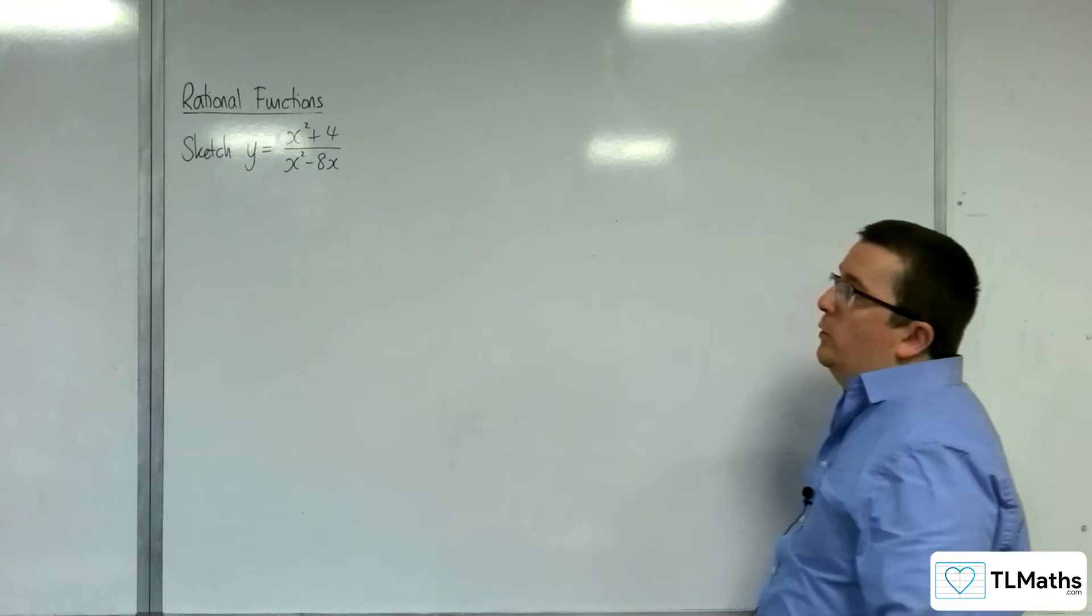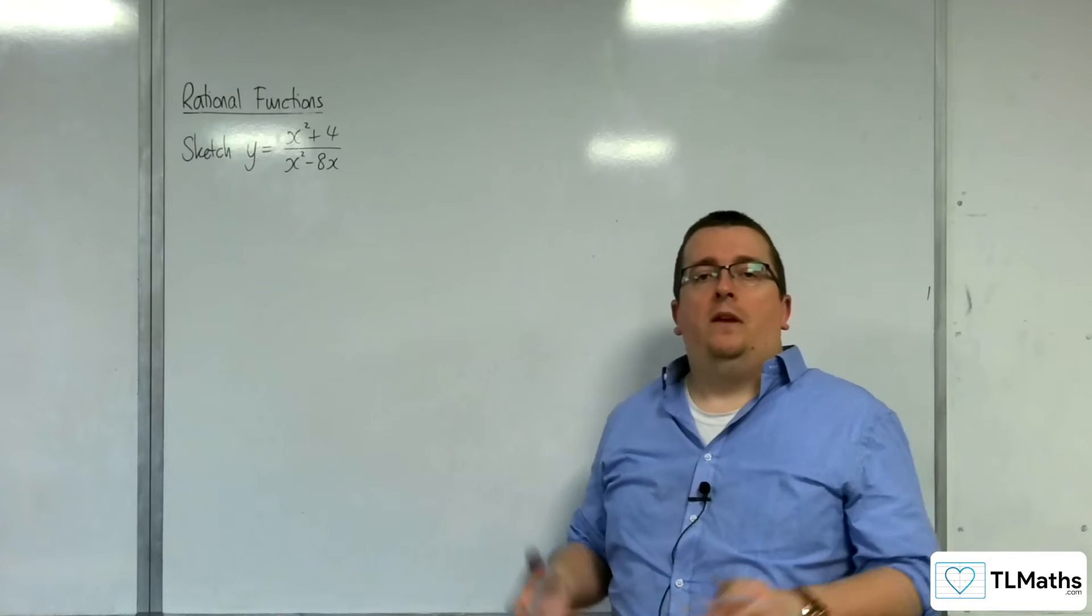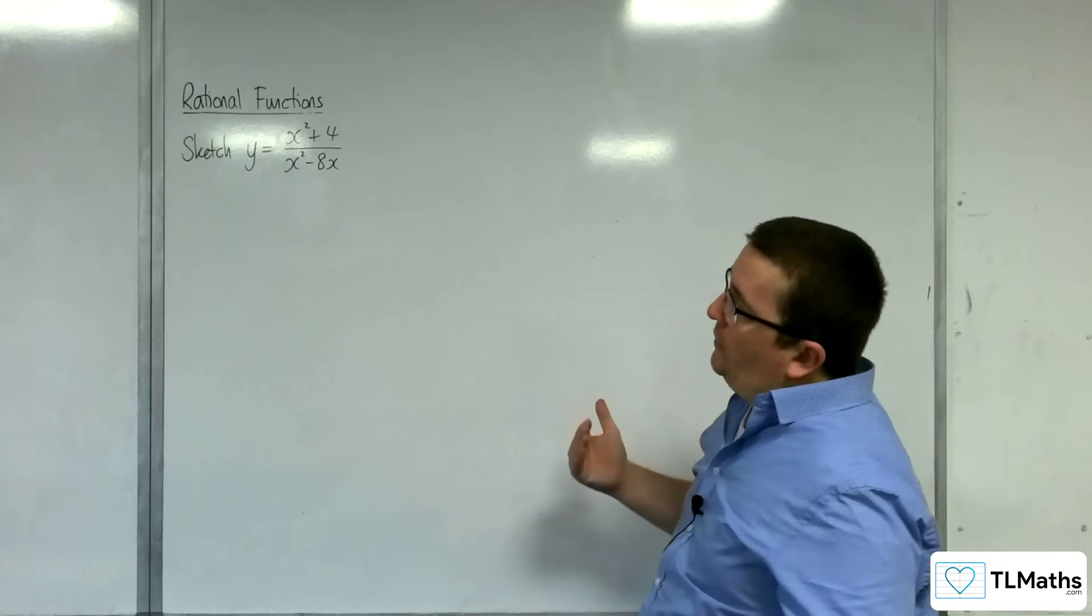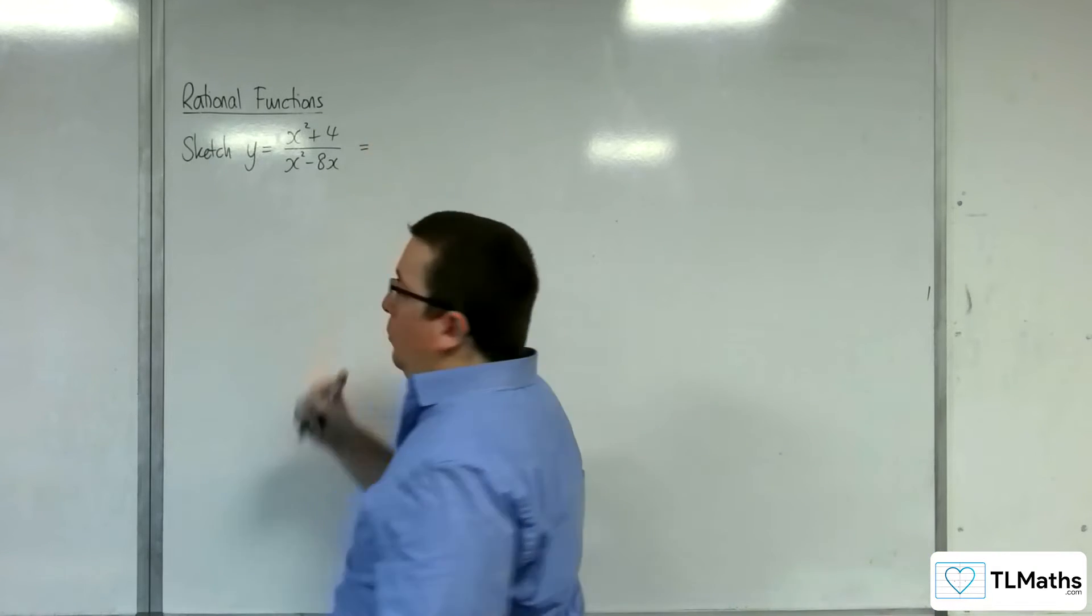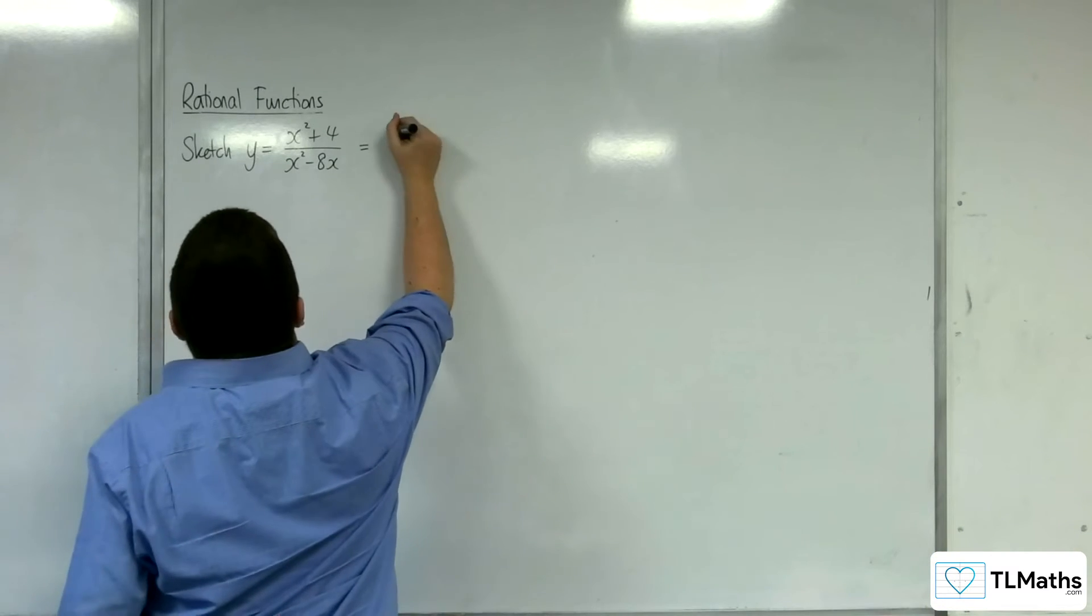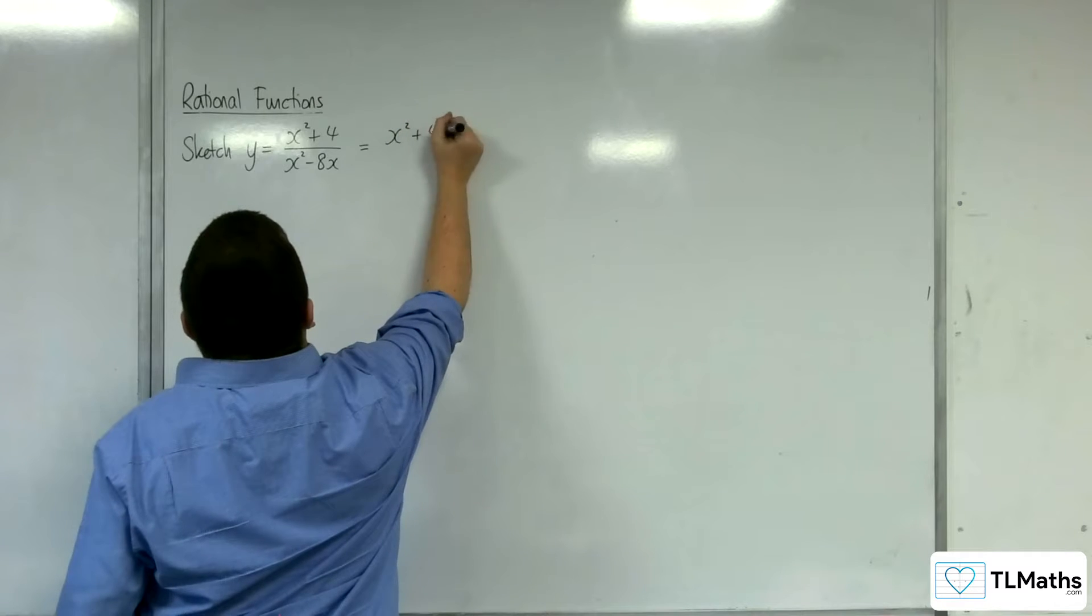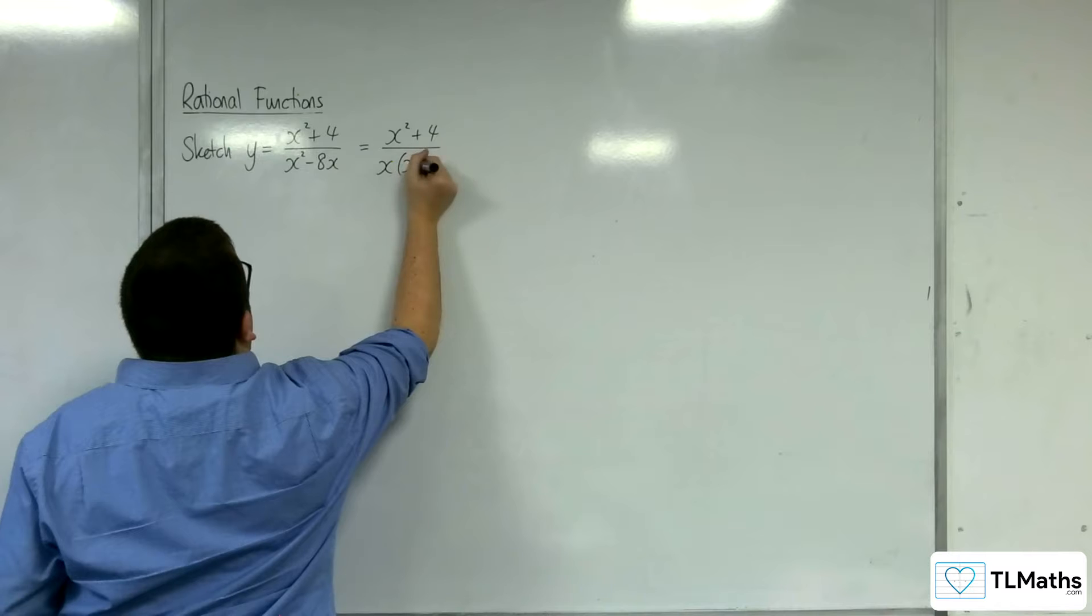In this video, we're going to be sketching y = (x² + 4)/(x² - 8x). First instinct is to try and factorize the numerator and denominator. Unfortunately, the numerator will not factorize, so x² + 4 is how we have to leave it. But the denominator factorizes to x(x - 8).